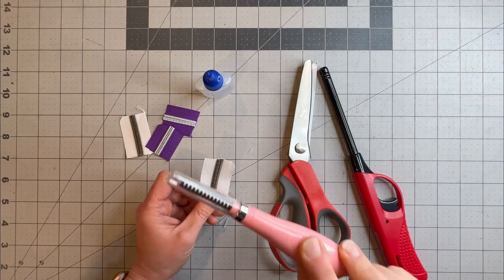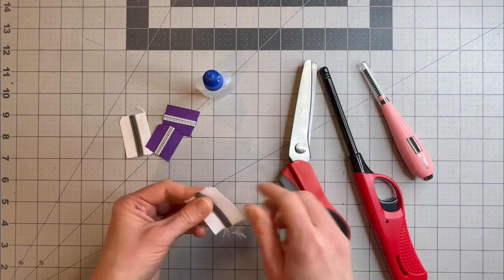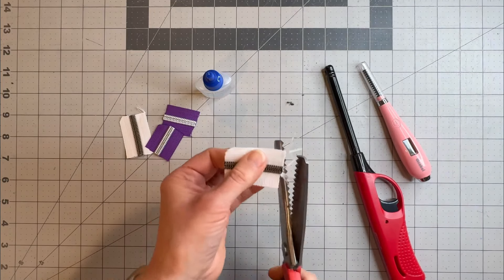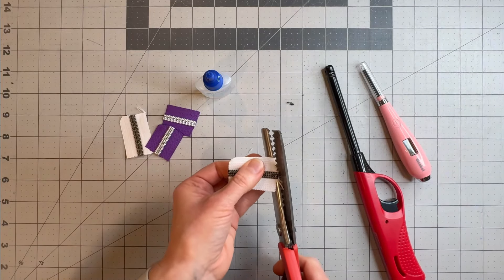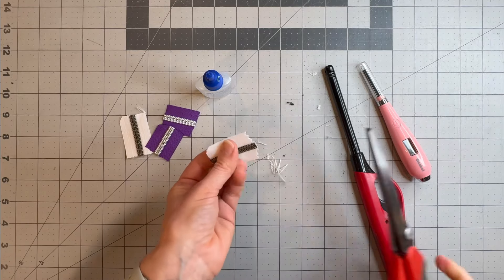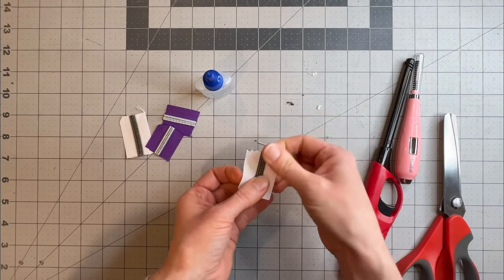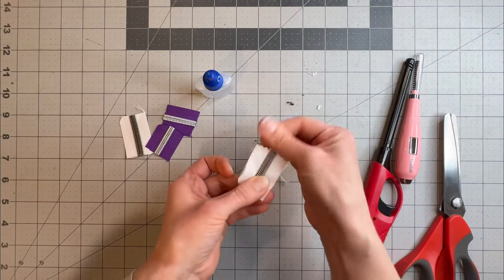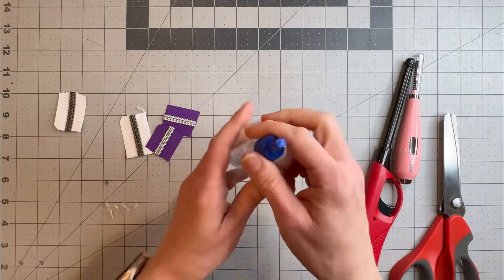But a couple of other options if you don't want to do that would be pinking shears, where you could just snip the ends and then you're not going to get as much fraying.